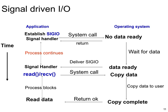The next IO model is called the signal-driven IO model. Here we want to improve upon the non-blocking IO model.